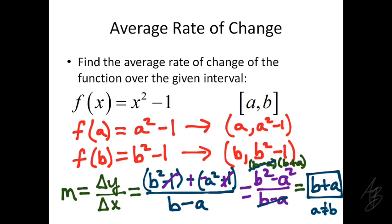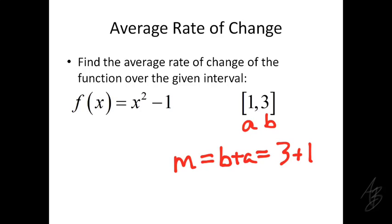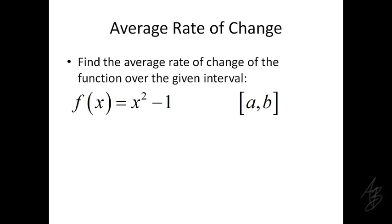Going back and checking with the previous problem, where a was 1 and b was 3, the average rate of change from that formula is b plus a, which is 3 plus 1 = 4. That formula allows us to generalize and plug in any two endpoints to get the average rate of change very quickly. Now let's do one more example. We'll say the left point is at a, and let h be the width of our interval, so the right endpoint would be a plus h.